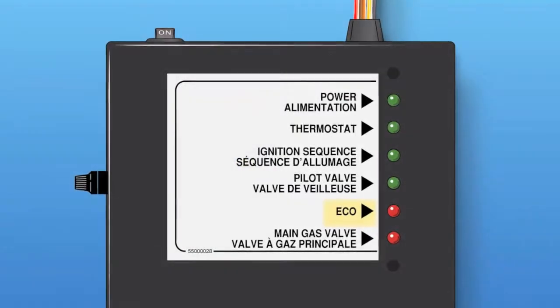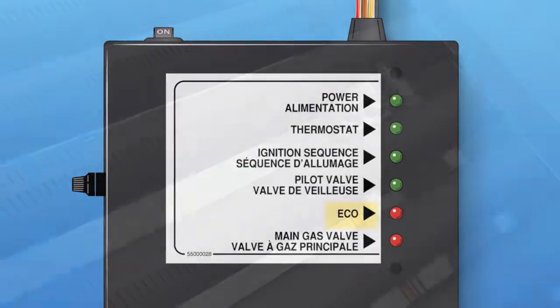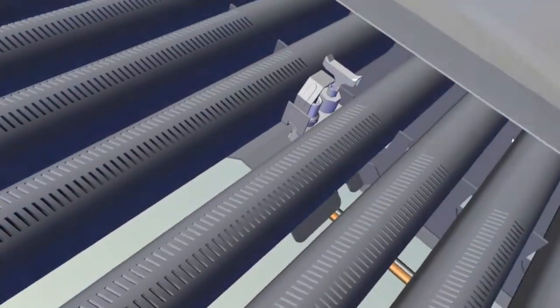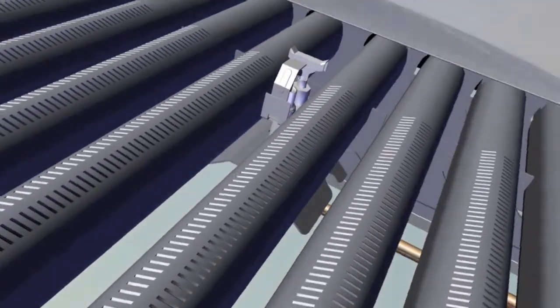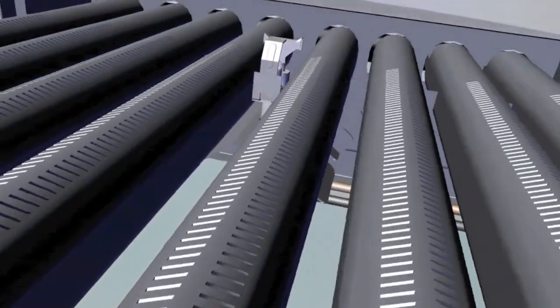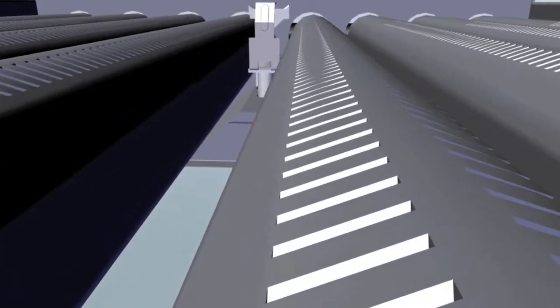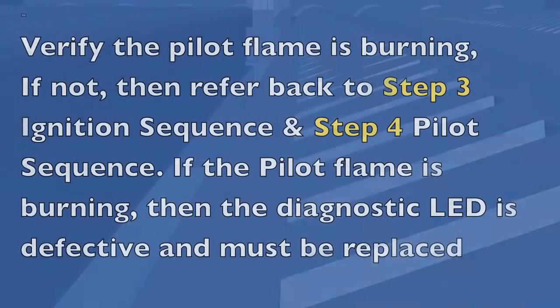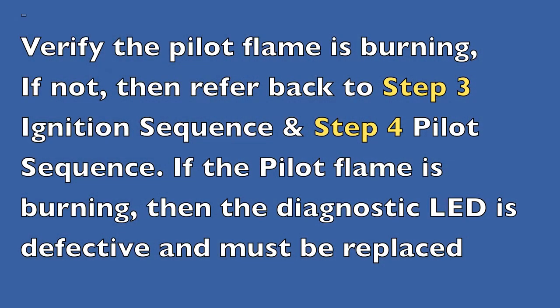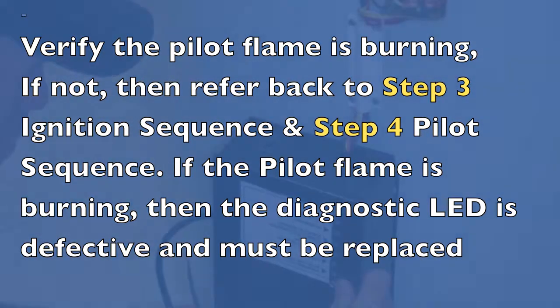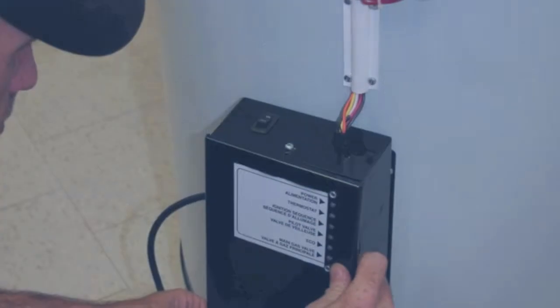If the ECO LED is still red, then verify the pilot flame is burning. If not, then refer back to Step 3, Ignition Sequence, and Step 4, Pilot Sequence. If the pilot flame is burning, then the diagnostic LED is defective and must be replaced.